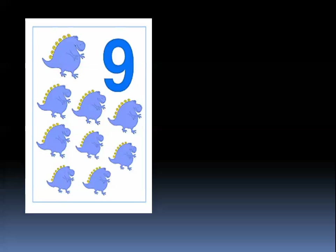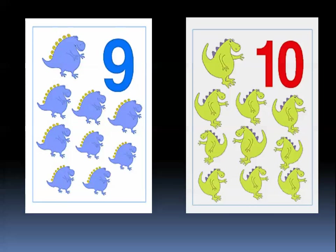After nine comes number ten. Yes, this is number ten. It consists of two numbers: one and zero. Let's count: one, two, three, four, five, six, seven, eight, nine, ten. So this is number ten.